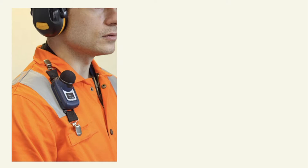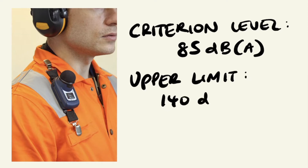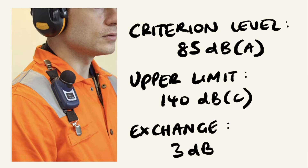Finally, the Noise Dosimeter. This is a small device that can be clipped onto a worker's uniform, ideally close to the ear. It is able to store an average noise level over a period of time and provide personal exposure measurements as the worker moves to different locations during their shift. Commonly, the dosimeter is worn for a complete shift with settings at a Criterion Level of 85 dB(A), which is the maximal permitted noise level, an upper limit of 140 dB(C), and an exchange rate of 3 dB, which is the increase or decrease in decibels corresponding to twice or half the noise dose.